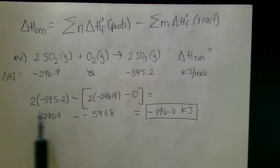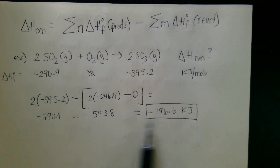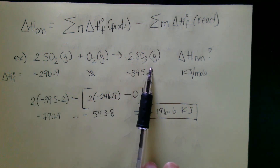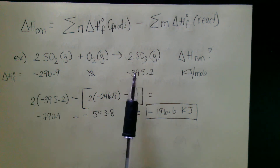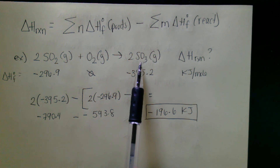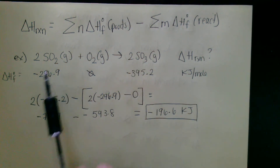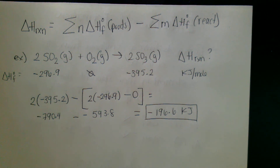The enthalpy change is negative, so this reaction is exothermic — energy is released, meaning the products are at a lower energy state than the reactants. That's how using formation reactions works.